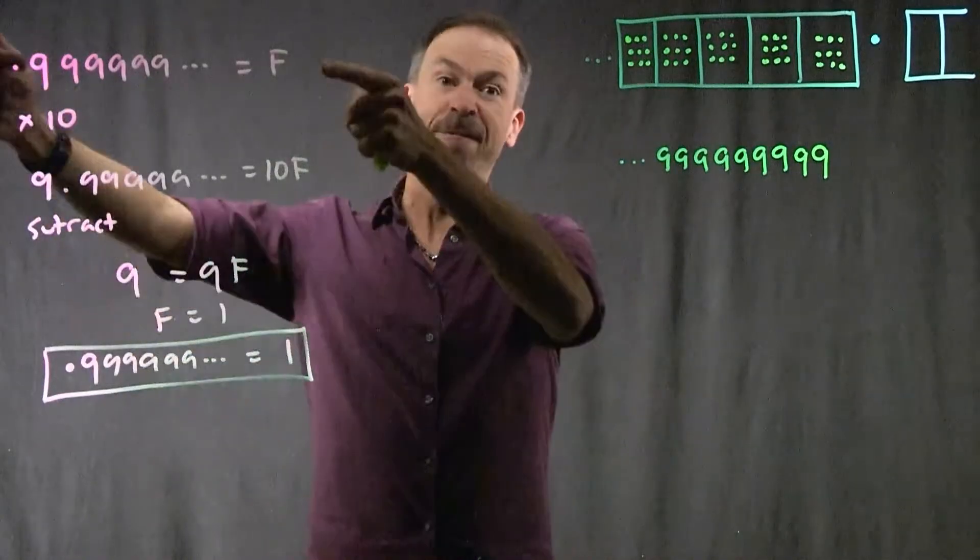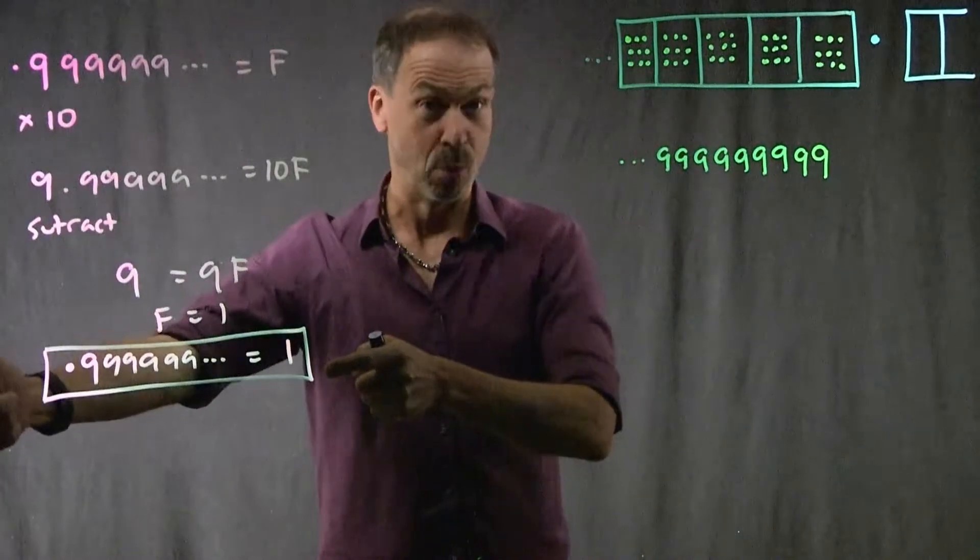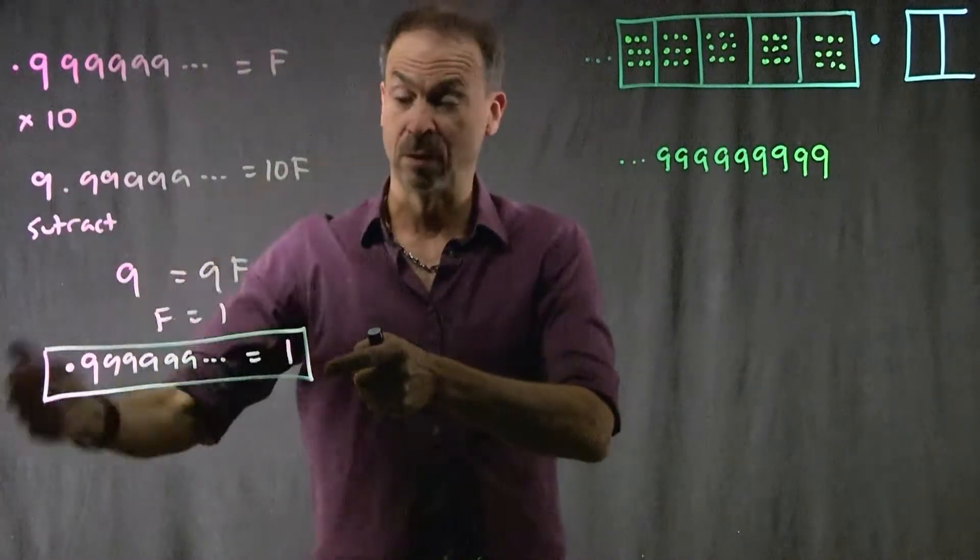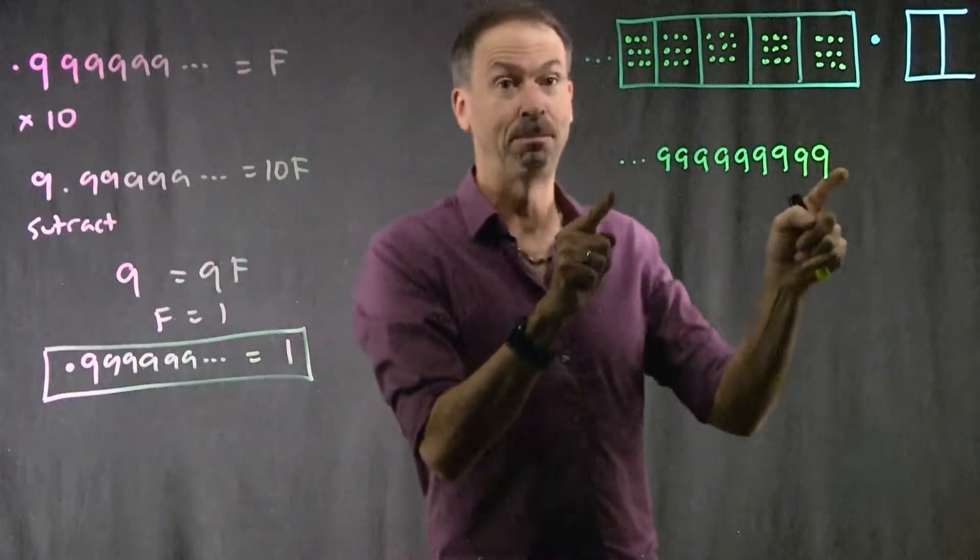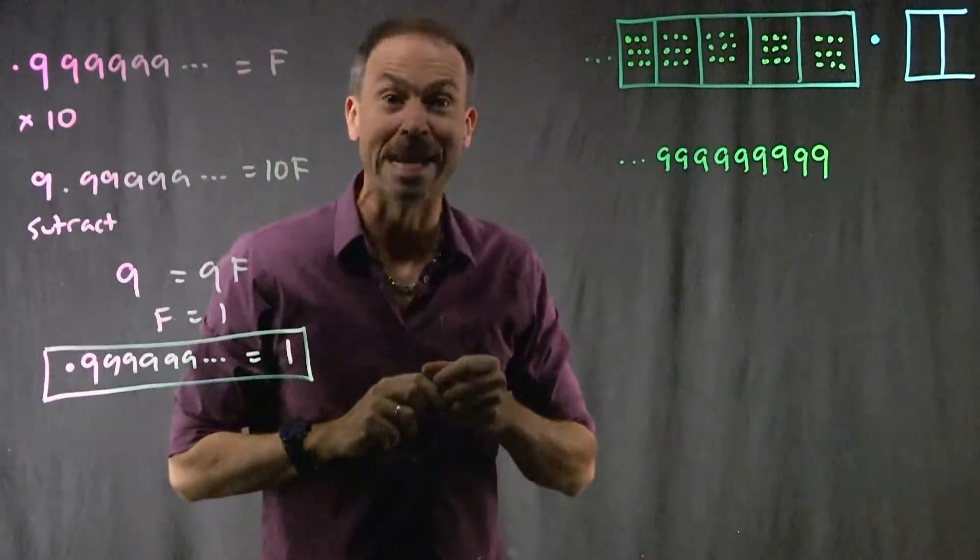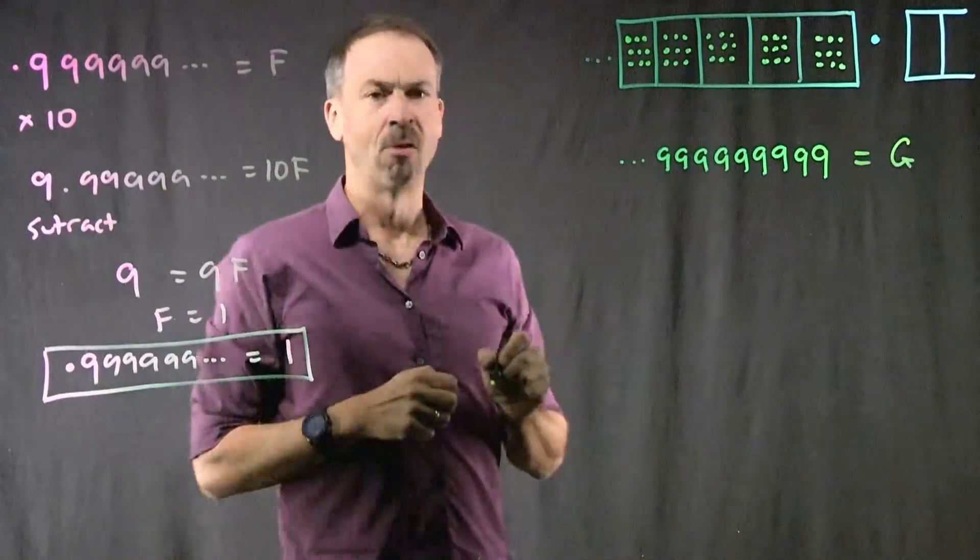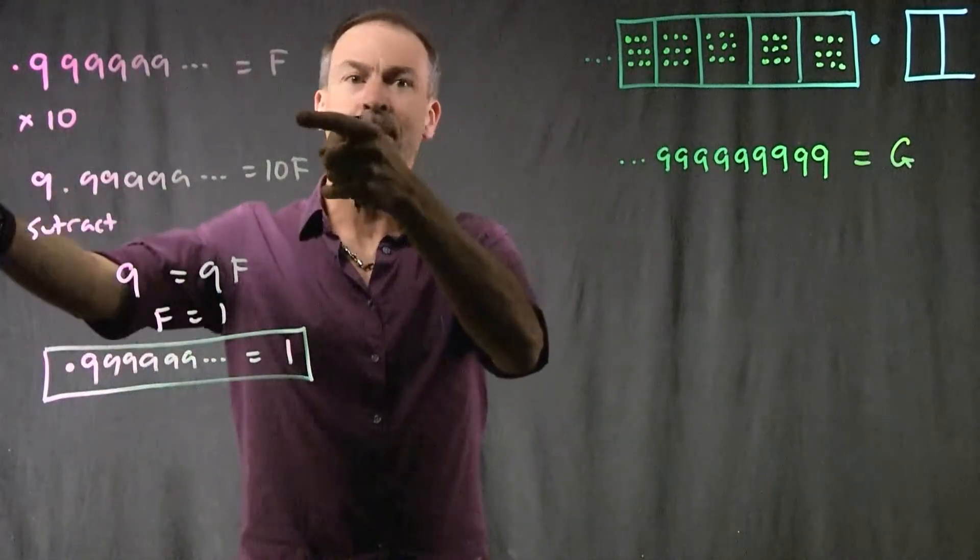But what I'm going to do now, I'm going to follow this exact same completely believable argument that we did for 0.99, all these nines going to the right of the decimal point, and apply it to this beast with the infinitely many nines going to the left. I'm going to copy it exactly. Step 1: Give it a name. I'll call it G for Georges. What's the first thing we did? We multiplied by 10.